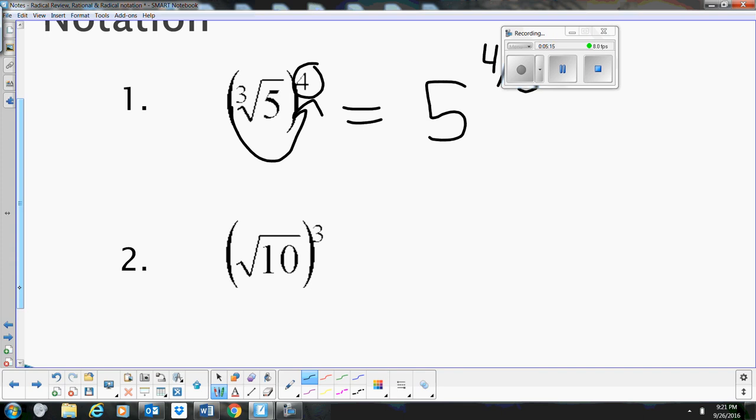Now the second one, our base is still 10. Now we don't have a root over here, but we know if it's just written, we assume to be a square root. So I'm going to write a 2 there just for now, and that then becomes the denominator. So this is written as 10 to the 3 halves.